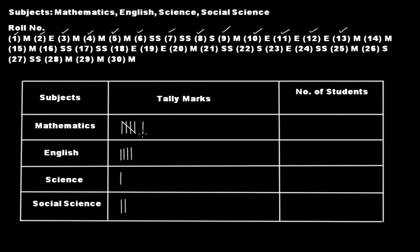Roll number 14 likes mathematics — another bar. Roll number 15 likes mathematics — another bar. Roll number 16 likes social science — third bar. Roll number 17 likes social science — fourth bar. Roll number 18 likes English — that makes the fifth bar. Roll number 19 likes English — one more bar. Roll number 20 likes mathematics — fourth bar. Roll number 21 likes social science — fifth bar.